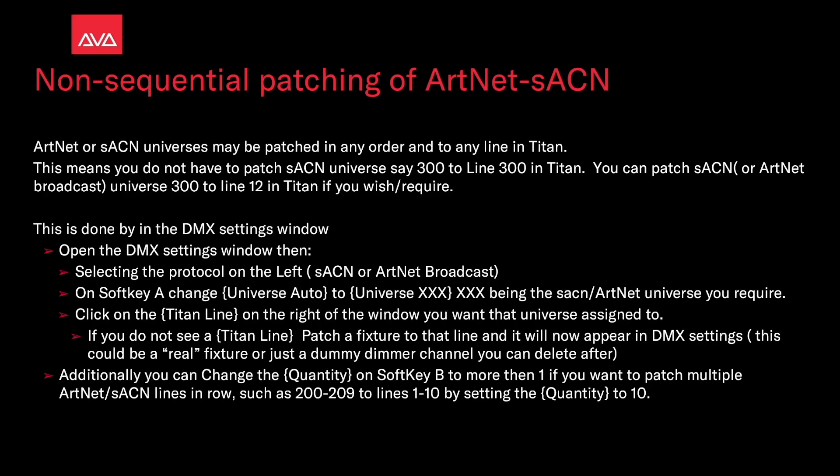This is all done in the DMX settings window. Open the DMX settings window, then select the protocol on the left for Streaming ACN or ArtNet Broadcast. On Soft Key A, change from Universe Auto to Universe XXX — XXX being the Streaming ACN or ArtNet universe you require. Click on the Titan line on the right of the window you want the universe assigned to. If you do not see a Titan line, patch a fixture to that line and it will now appear in DMX settings. This can be a real fixture or just a dummy dimmer channel which you can delete after.